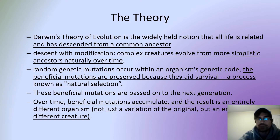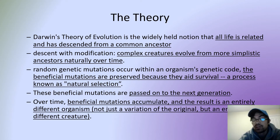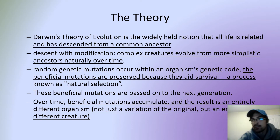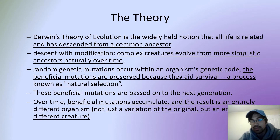Beneficial mutations tend to be preserved if they help with survival. Some mutations can be bad and prevent survival, but some end up actually being good. That benefit accumulates over time — one benefit is passed to the next generation, then another mutation adds another benefit. They're essentially additive, and over millions or hundreds of thousands of years, these accumulated changes produce different organisms.